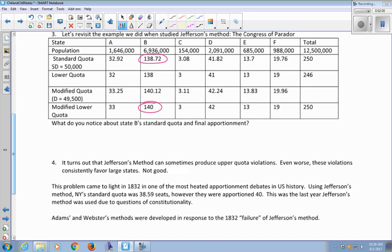Their standard quota is 138.72. So according to the quota rule, they should be awarded 138 or 139 seats. That would be the only two fair things to give them. But we gave them 140. So we have an upper quota violation here. We went higher than the upper quota.